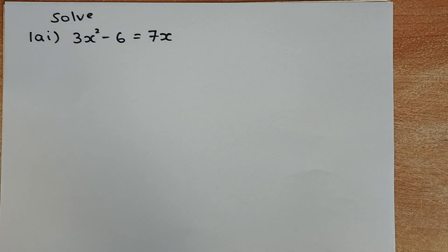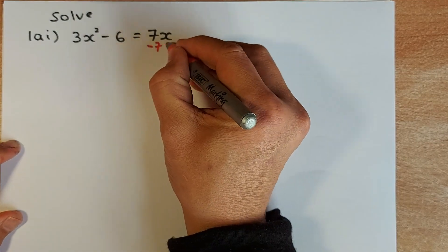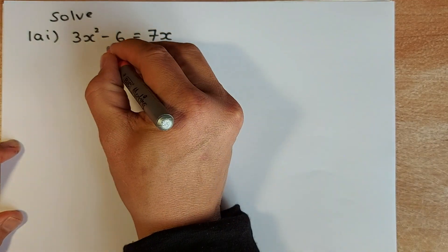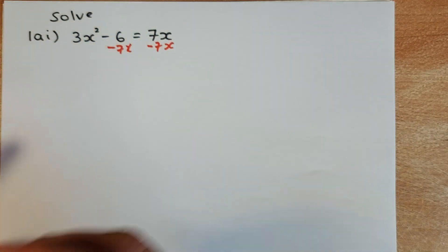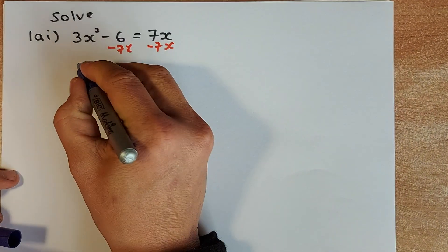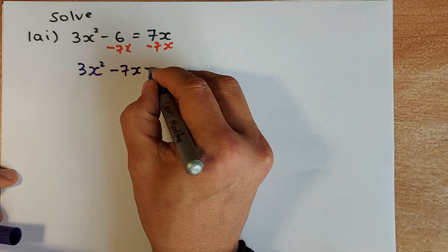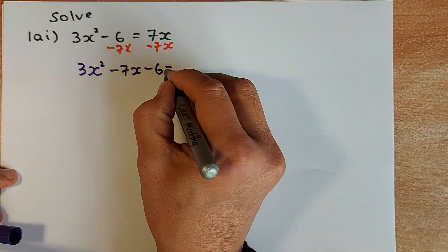The first question was: solve 3x squared minus 6 equals 7x. Remember, when you have a quadratic, you have to make the equation equal to 0. So we minus 7x on both sides, and the equation is going to look like this: 3x squared minus 7x minus 6 equals 0.